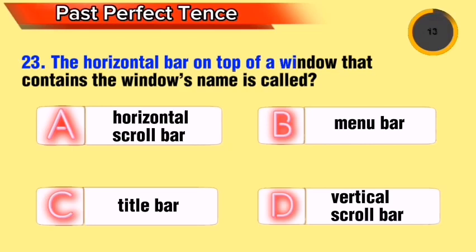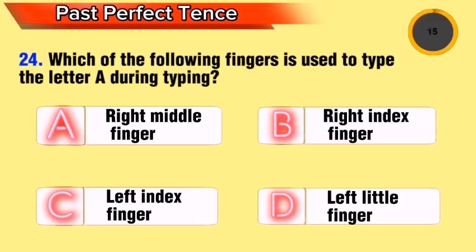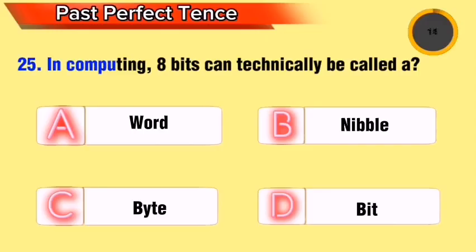Question 14: The horizontal bar on top of a window that contains the window's name is called what? Question 15: Which of the following fingers is used to type the letter A during typing? Question 16: In computing, 8 bits can technically be called what?